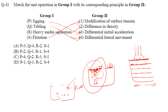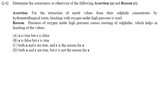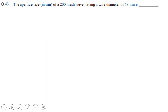The next question is an assertion-reason type about extraction of metal values from sulfide concentrates by hydrometallurgical leaching with oxygen under high pressure. The assertion is true — we do leach with oxygen under high pressure. The reason states that the presence of oxygen under high pressure causes roasting of sulfide, helping leaching. This is also correct and is the reason for the assertion. So the answer is option C — both A and R are true and R is the reason for A.